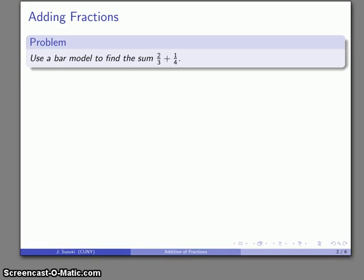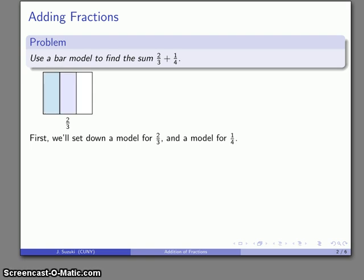Alright, well let's try to add two fractions. So here we'll try to add the fractions 2 thirds plus 1 quarter. So I might start off by drawing a model for 2 thirds. So I'll take my whole, divide it into three pieces, and take two of those equal pieces. So there's my model for 2 thirds.